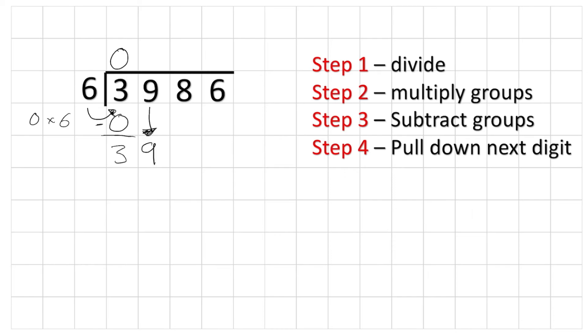How many 6's are there in 39? 6, 12, 18, 24, 30, 36. Can't get to another number, so we have 6. 6 times 6, 6 times 6 is 36. Subtract 36 from 39, leaves me with 3.